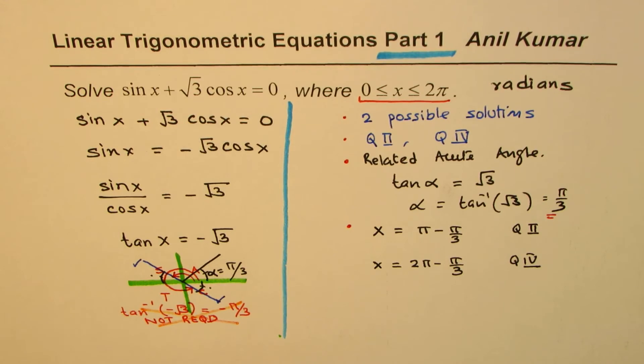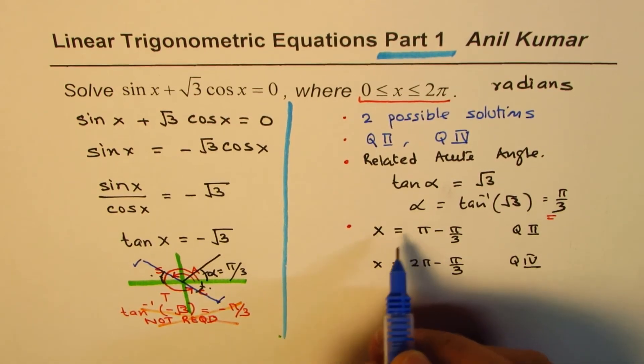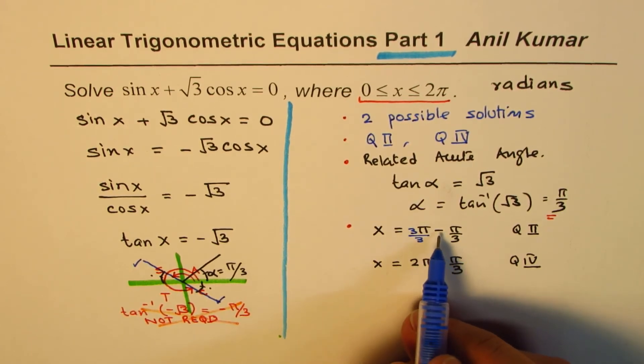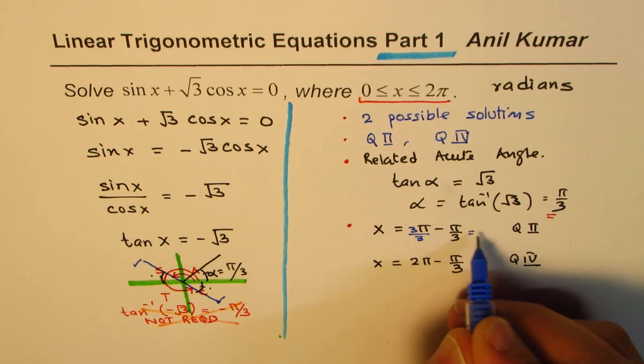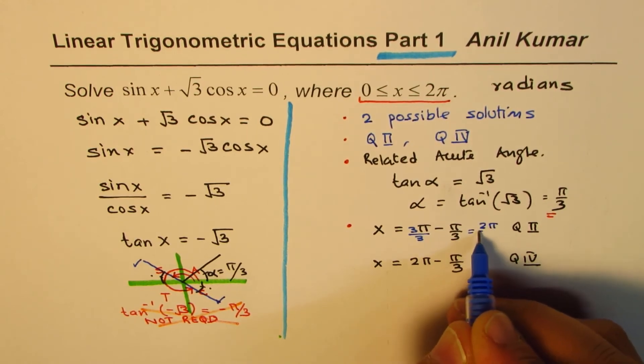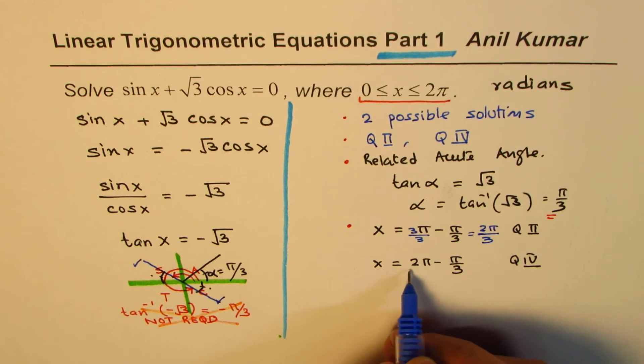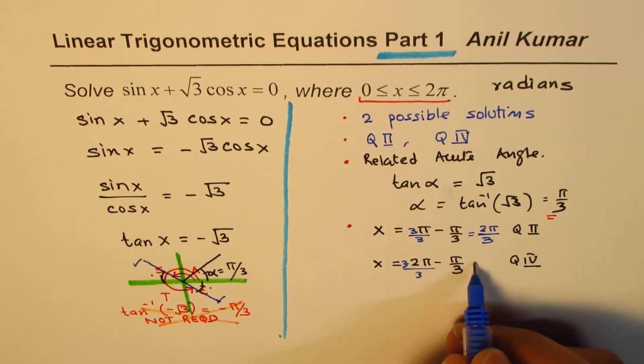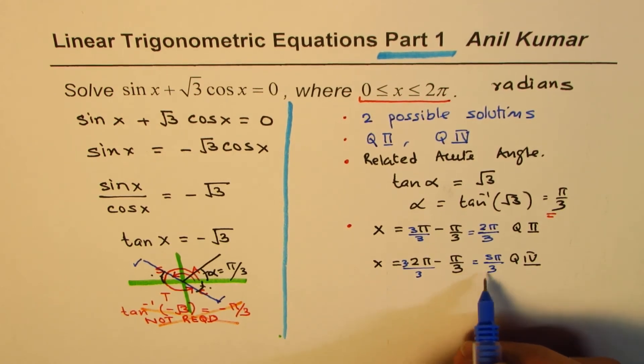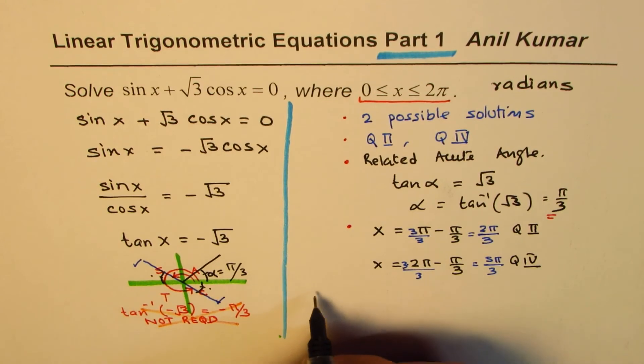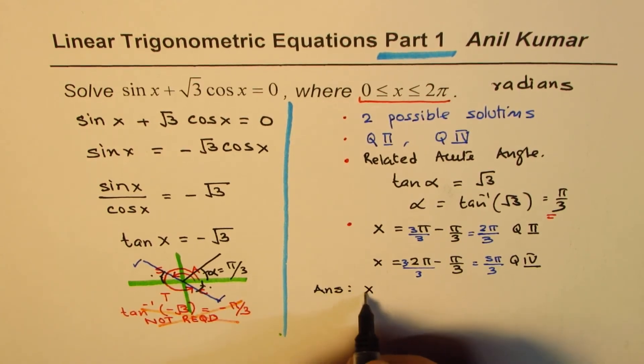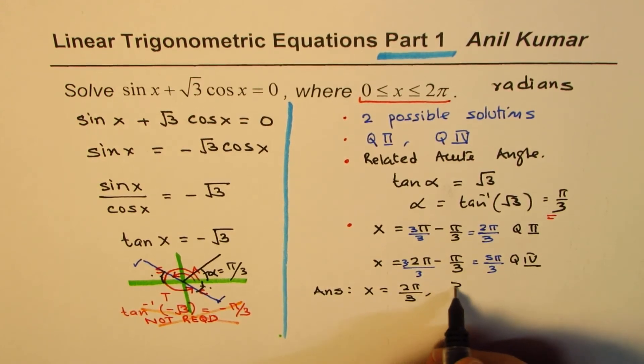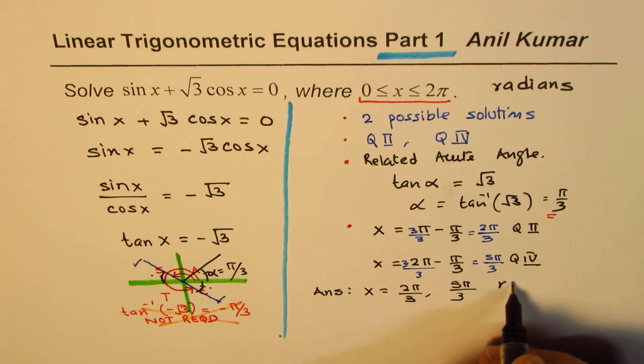You can calculate this. So you can take 3 common denominator, you could write this as 3π by 3. So that gives you 3π minus π as 2π. So you get this as 2π by 3. And here you could multiply by 3, which is 6. 6 minus 1 is 5, so you get 5π by 3. And with that, you can write down your answer. And our answer is x equals 2π by 3 and 5π by 3. The units are radians.